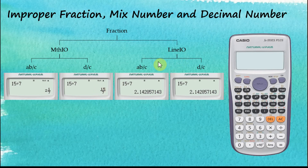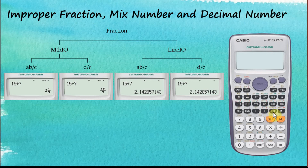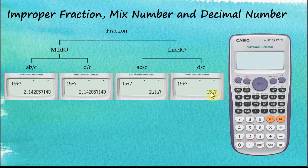We can convert fractions to decimal numbers or decimal numbers to fractions using the SD button. When we tap the SD button, fractions are converted to decimal numbers and decimal numbers are converted to fractions. For the display set to mixed numbers, the answer is given in mixed numbers, and for the one set to improper fractions, the answer is given in improper fractions.